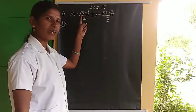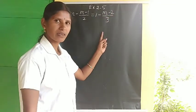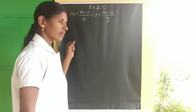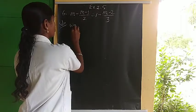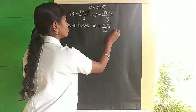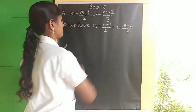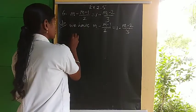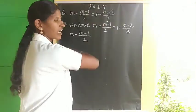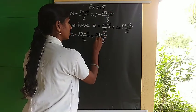Next sum: M minus (M minus 1) by 2 equals 1 minus (M minus 2) by 3. In the first step, transpose the M minus 2 by 3 term to LHS. So M minus (M minus 1) by 2 plus (M minus 2) by 3 equals 1. Find the LCM of 2, 1, and 3, which is 6.